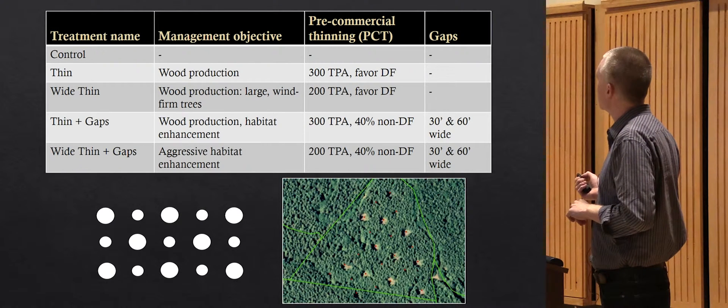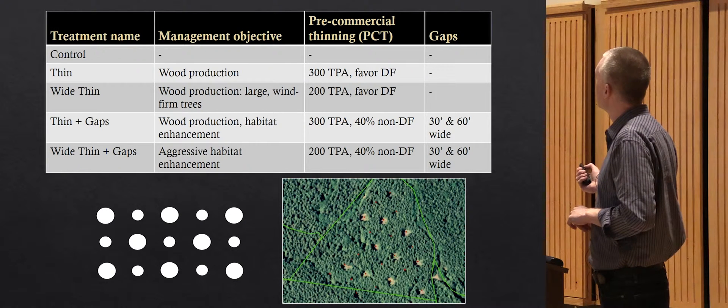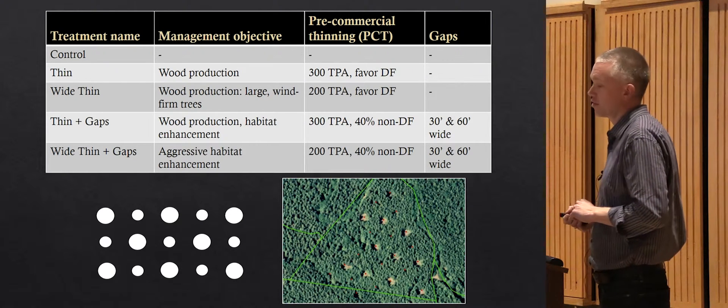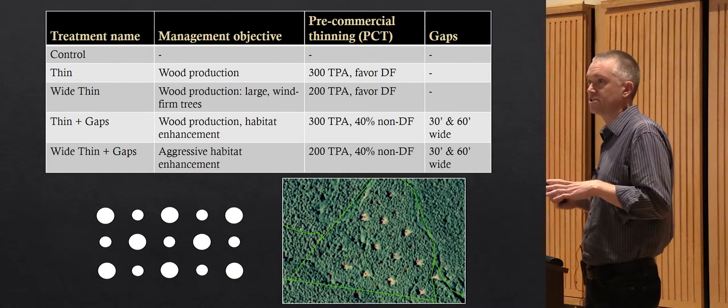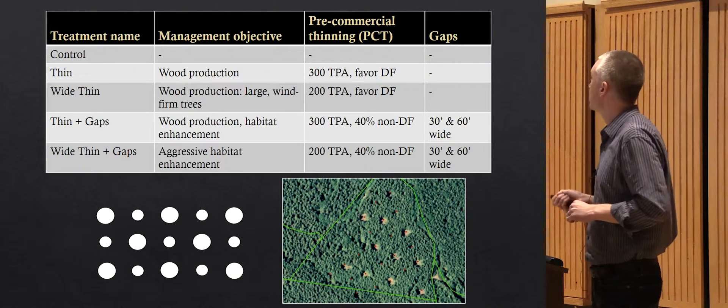Then we have a standard pre-commercial thin. The goal was wood production. They thinned to a pretty typical rate of 300 trees per acre. Whenever there was Douglas fir, they chose that in the trees to leave.